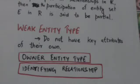For example, the entity type Dependent, related to the Employee entity type, is used to keep track of the dependents of each employee. Attributes of the Dependent entity type are name and age. Two dependents of two different employees may have the same values for name and age, but they are still different entities. They are identified as distinct entities only after determining the particular employee entity to which each dependent is related.